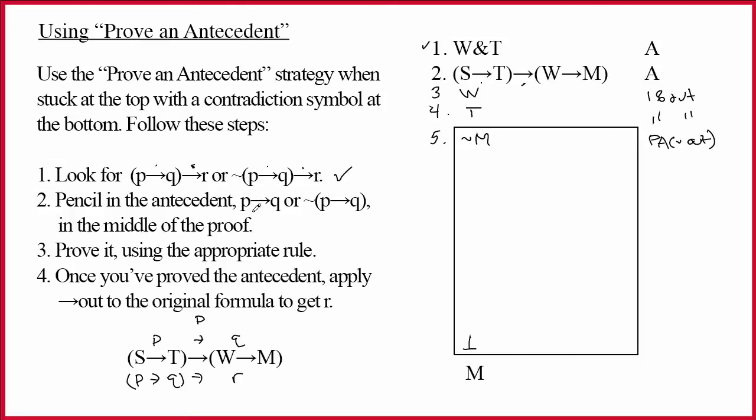Step two, pencil in the antecedent. Well, the antecedent is just the fancy word for everything that's in front of the arrow. But remember, this makes so much sense if you just say to yourself, I really want to do arrow out on line two. What would I need to have on another line to do arrow out? Obviously, I'd need to have S arrow T. Notice, I'm going to pencil it in in the middle of the proof. Check. I've just done that.